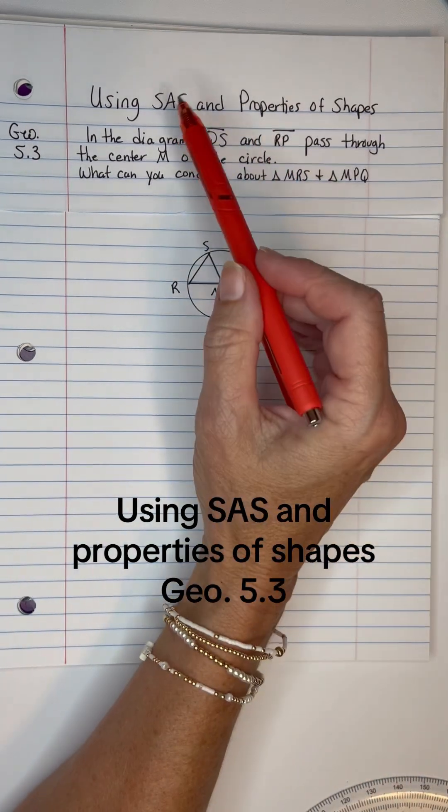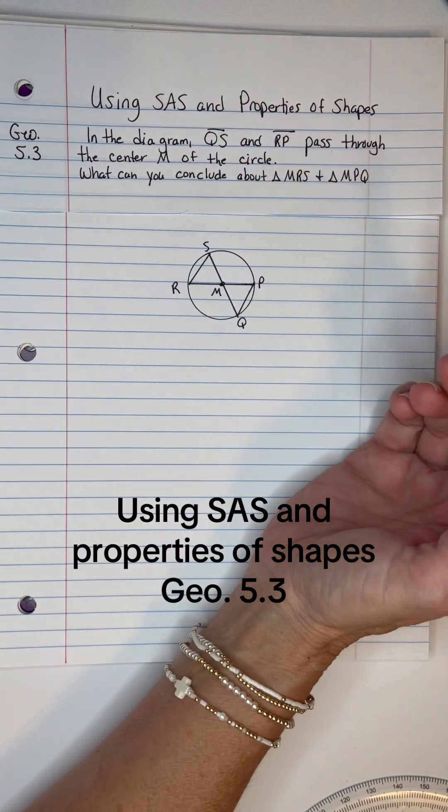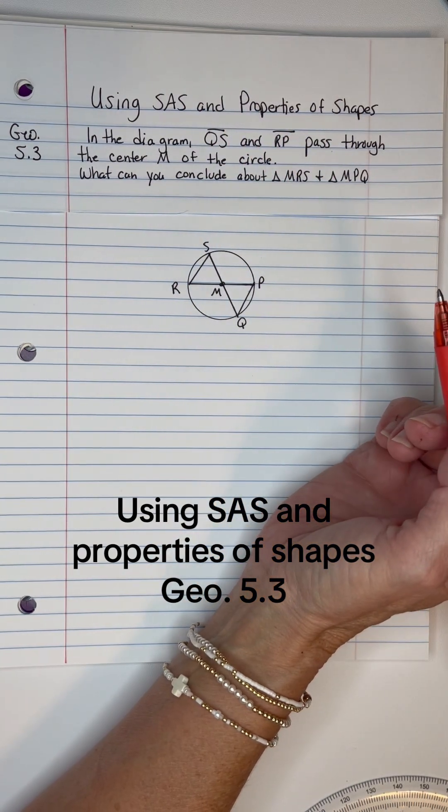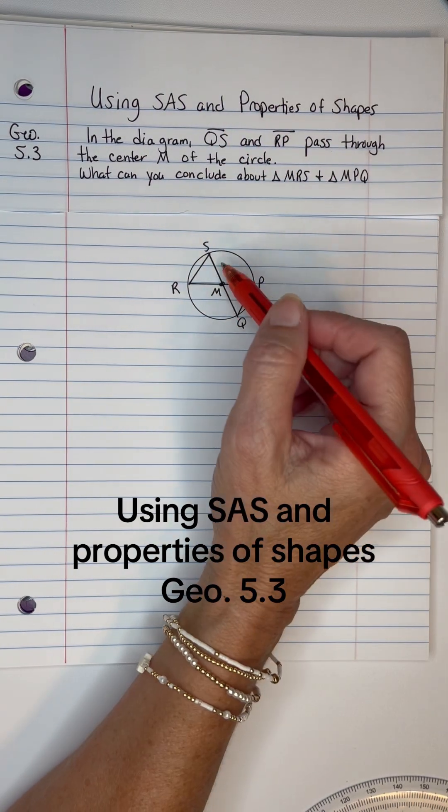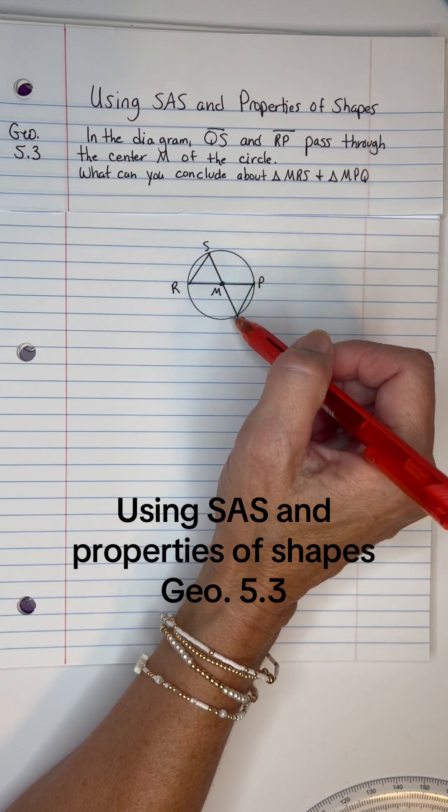And first of all, notice that we're talking about side angle side. So if we're talking about that, they're probably wanting us to use that. Let's see what we can mark. Since these are radius, these are each radius or radii,